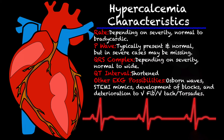One of the dead giveaways of hypercalcemia is shortened QT intervals. Other EKG possibilities — you may see Osborne waves, and you may also get EKGs that mimic a STEMI. You may see elevation in V1 and V2, which would typically indicate a septal MI, but in this case it would just be due to the hypercalcemia. The development of AV blocks is also a possibility.